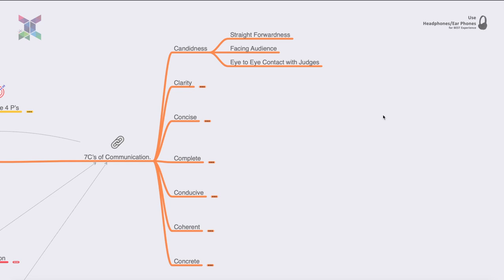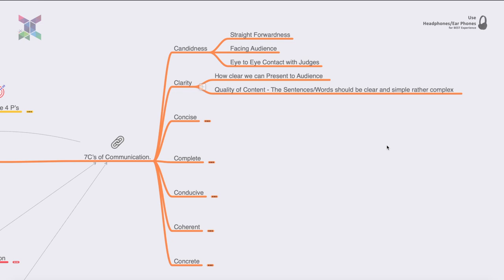The second C is clarity — how clearly you present your sentences or the theme in a straightforward manner. The quality of content always depends upon the words you use and the simplicity of your sentences, so that even a layman can understand what you are speaking about.